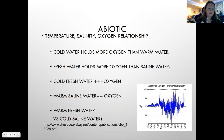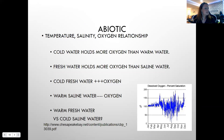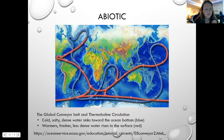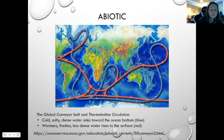Temperature trumps salinity — warmer water cannot dissolve oxygen as easily as colder water. This image of the global conveyor belt helps show the global circulation of temperature and saltiness: cold, salty, dense water sinks toward the bottom, while warmer, fresher, less dense water rises to the surface. Study this to understand where those water movements occur globally.